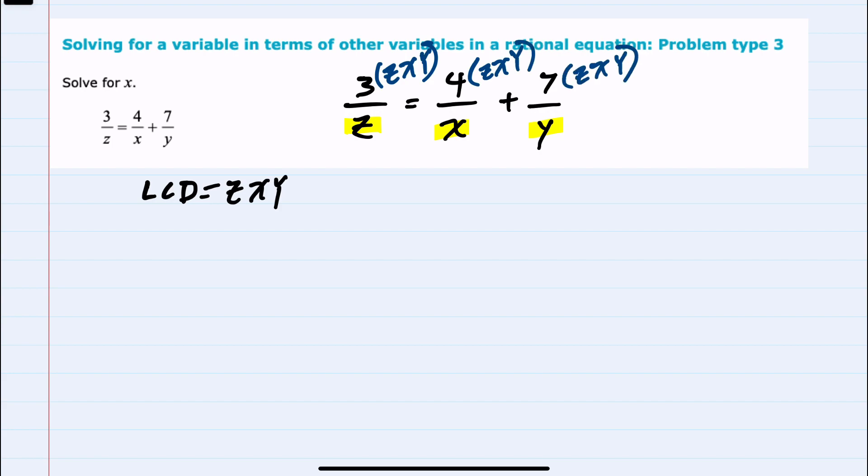And the effect will be that these denominators will cancel. So I would have 3xy on the left, and then this x cancels, giving me 4zy, and then the y cancels, leaving me with 7zx.